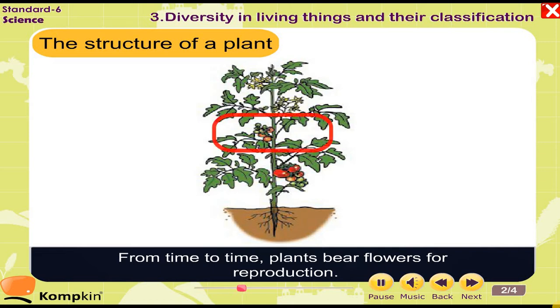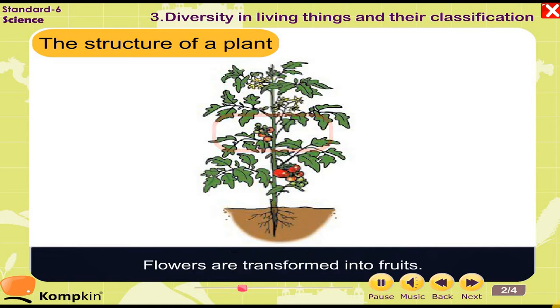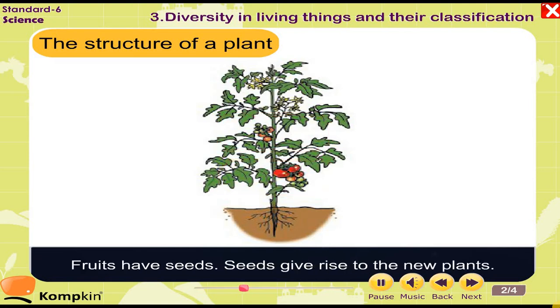From time to time, plants bear flowers for reproduction. Flowers are transformed into fruits. Fruits have seeds. Seeds give rise to the new germ.